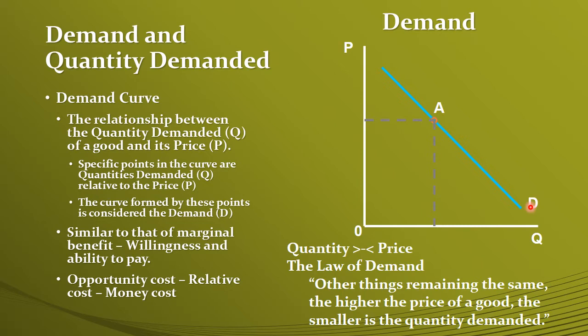The more we consume, the less benefit we perceive — that determines our willingness and ability to pay. The price represents the opportunity cost, which is the relative cost, the money cost. Each of the points on the curve shows the specific relation between a certain price and a certain quantity demanded.